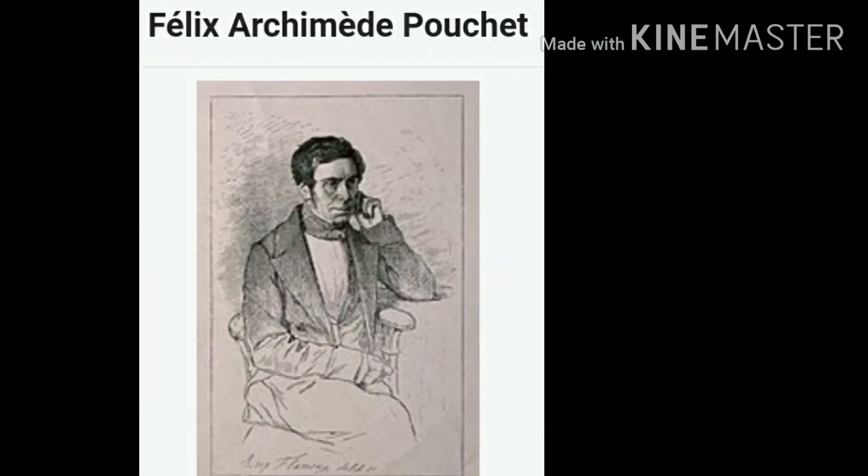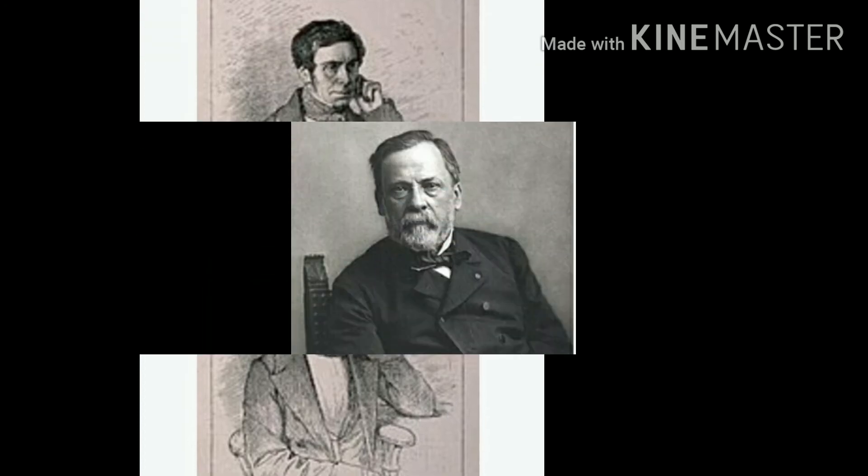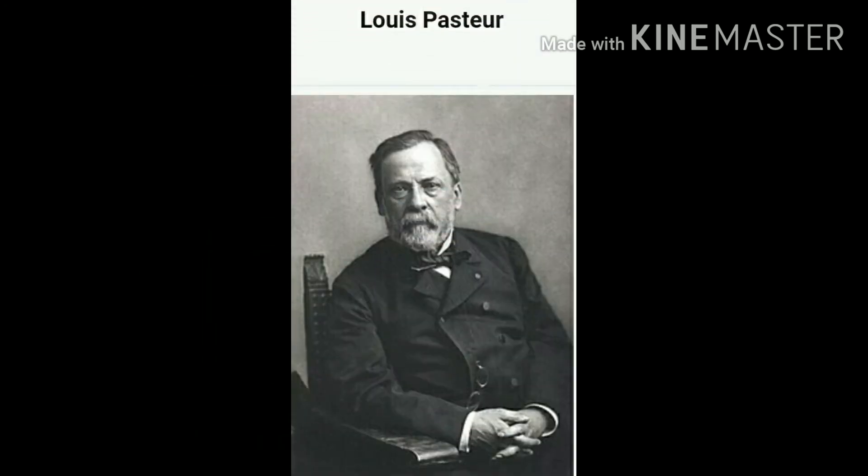In 1859, Felix Archimede Pouchet published an extensive report proving the occurrence of spontaneous generation. Irritated by Pouchet's logic and data, Pasteur performed an experiment that ended the argument for all time.